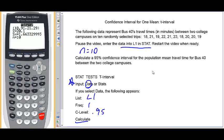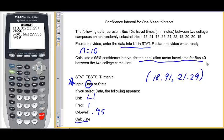Okay, so our interval comes up 18.91 up to 21.29. So I'm 95% confident that the population mean travel time for bus 40 between the two college campuses is between 18.91 minutes and 21.29 minutes. So you can more roughly interpret this to close to 19 to 21 and a half minutes.